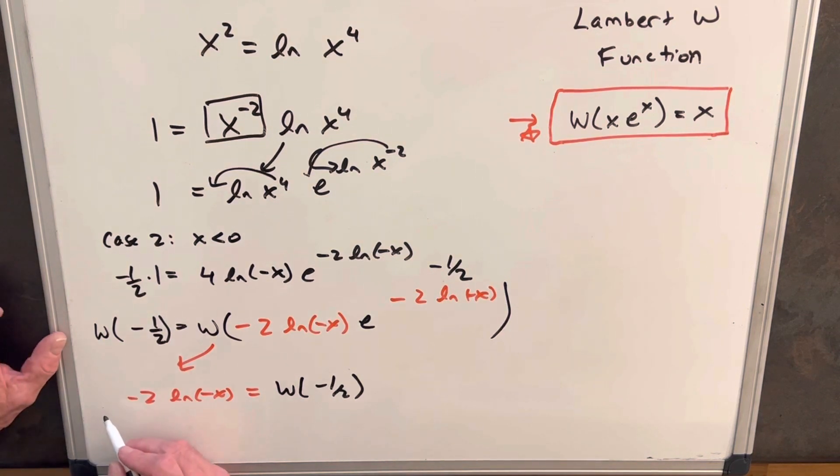We'll multiply minus 1/2 here and minus 1/2 here. So that'll cancel.